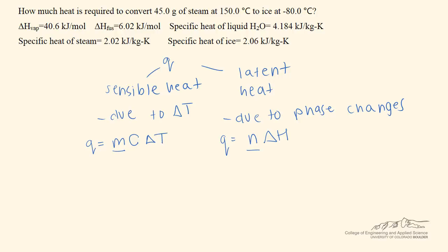The heat of vaporization and fusion is given per mole, so I'm multiplying by moles to obtain units of kilojoules. The specific heats are in units of per kilogram Kelvin, so I want my mass to be in kilograms for the units to cancel.